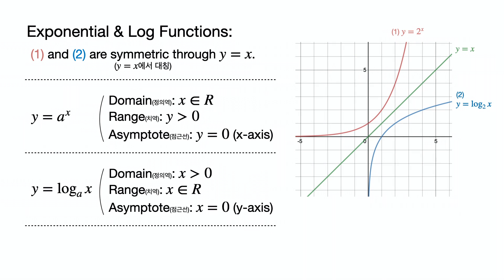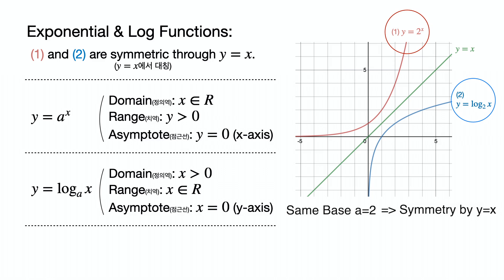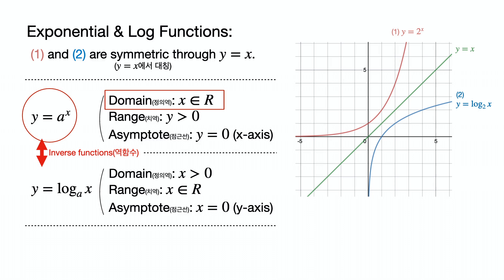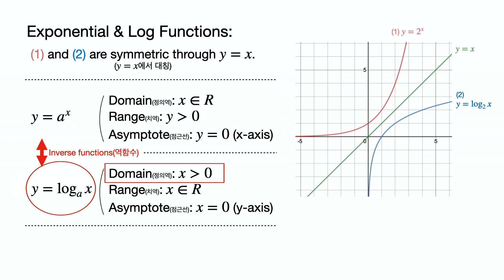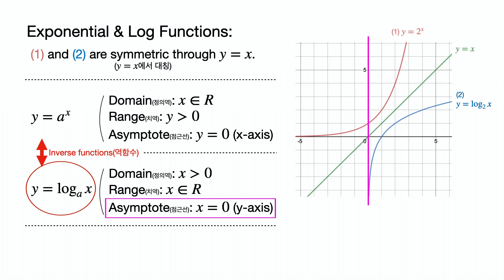Let's compare the exponential and log functions, where a is positive and not equal to 1. If both functions have the same base a, they are symmetric about y equals x — meaning they are inverses of each other. The graphs on the right show an example where a equals 2. The domain of the exponential function y equals a to the x is all real numbers, the range is all positive numbers, and there is one asymptote at y equals 0. The domain of the log function y equals log base a of x is all positive numbers, the range is all real numbers, and there is one asymptote at x equals 0.